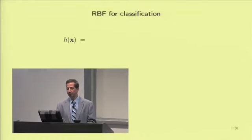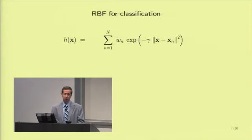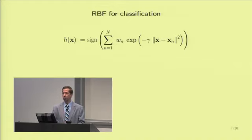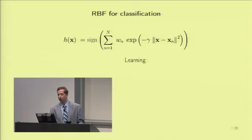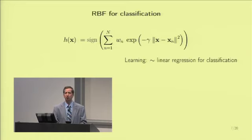The model as described is a regression model with real-valued output matched to real-valued targets. Often we will use RBFs for classification. When you look at H(x), it gives you a real number. We take the sign of this — plus one or minus one — and interpret the output as a yes/no decision. That's not an alien situation: you've seen linear regression used for classification before.